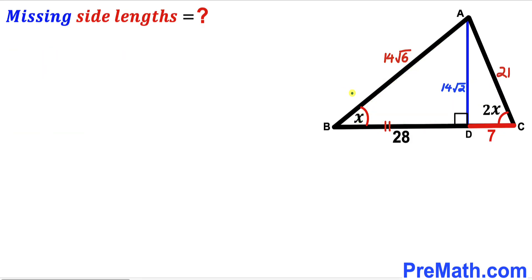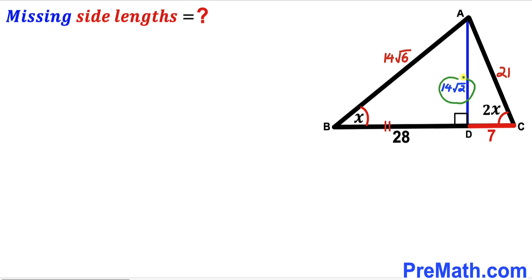So after all the calculations, side AC turns out to be 21 units, side AB turns out to be 14 times the square root of 6 units, and perpendicular AD turns out to be 14 times the square root of 2 units. That's our final answer. Thanks for watching and please don't forget to subscribe to my channel for more exciting videos.